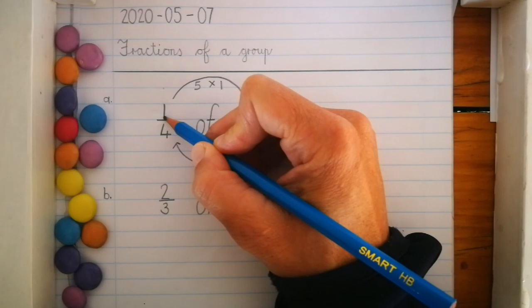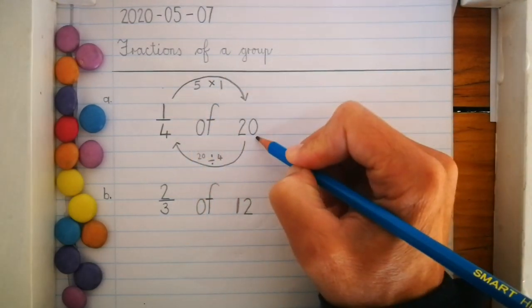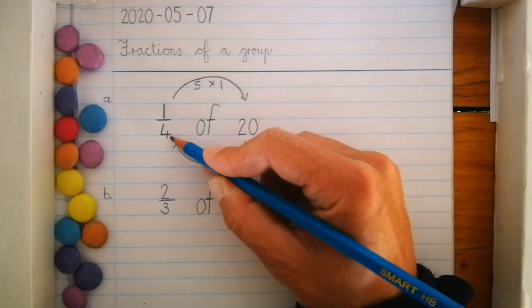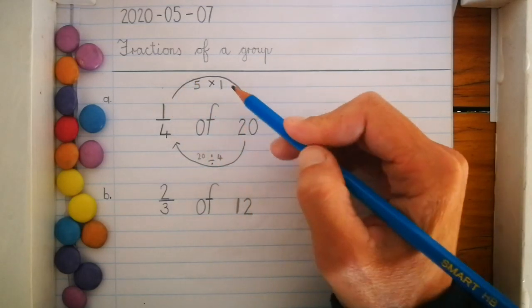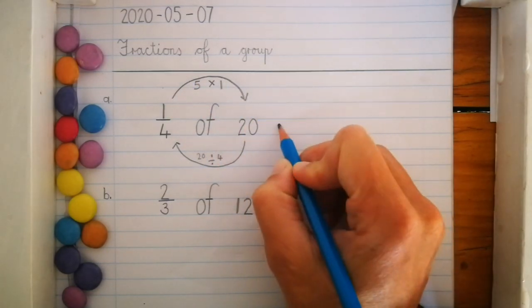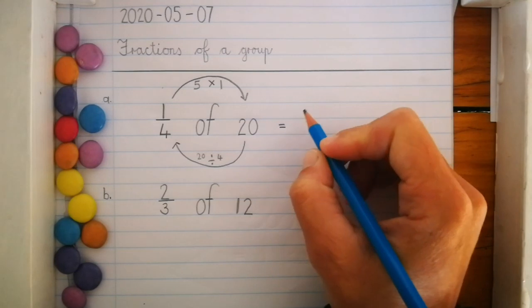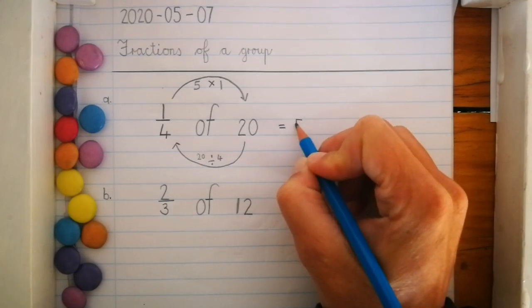It's the numerator, the number at the top of the fraction. So I take my whole number 20, I divide it by my bottom number. Then I take my answer and times it by my top number. So in this problem, the answer is 5.